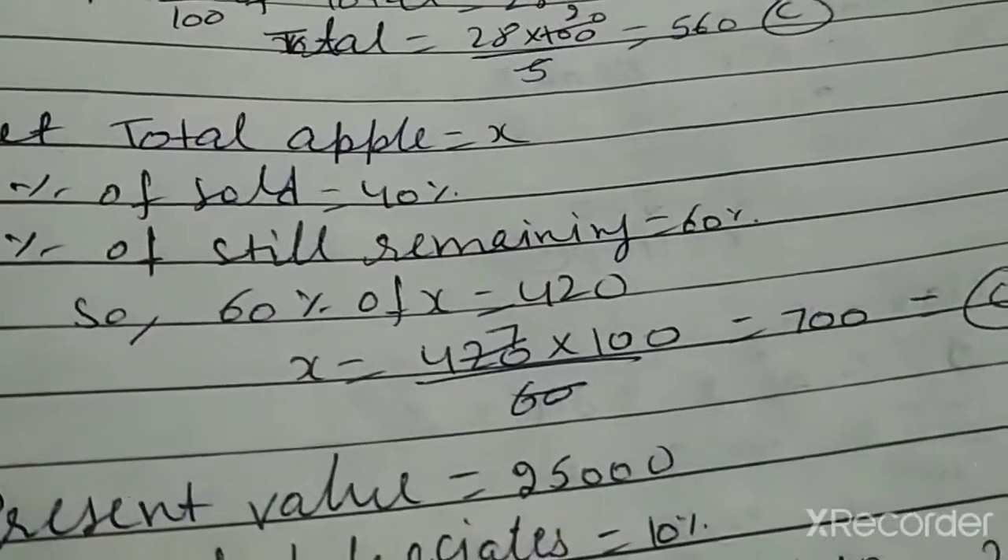Question number 13: ek shopkeeper ne 40% apples sell kiye. After 40% sell, which is 60%, over 60% apples remain. So 60% of x equals total apples. Question number 14: one machine's value 10% depreciate hogi. So 25,000 multiplied by 90%, because 100 minus 10 is 90.